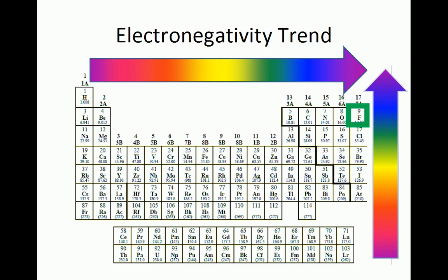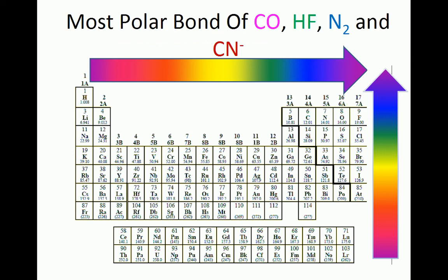To determine the polarity of the bonds in carbon monoxide, hydrofluoric acid, molecular nitrogen, and the cyanide ion, we need to assess the differences in electronegativity between the two elements in every bond. A quick and easy method to do so in this problem is to look at how far apart the elements in a bond are from one another vertically and horizontally in the periodic table. The further apart the two elements in the bond are, the more polar the bond is.